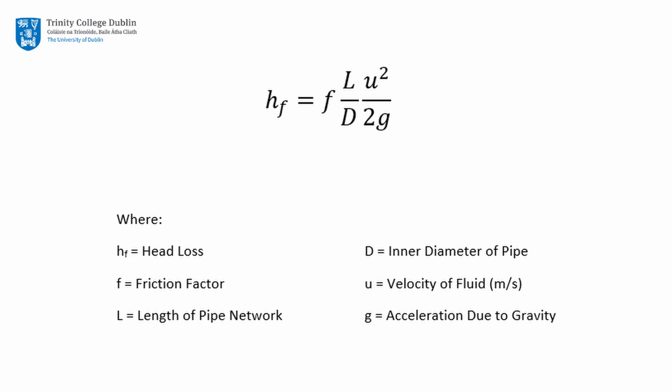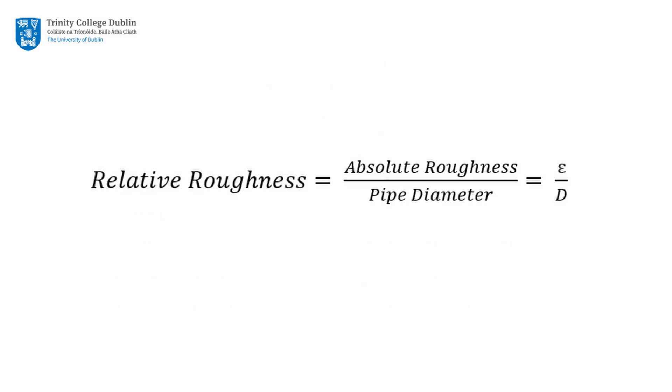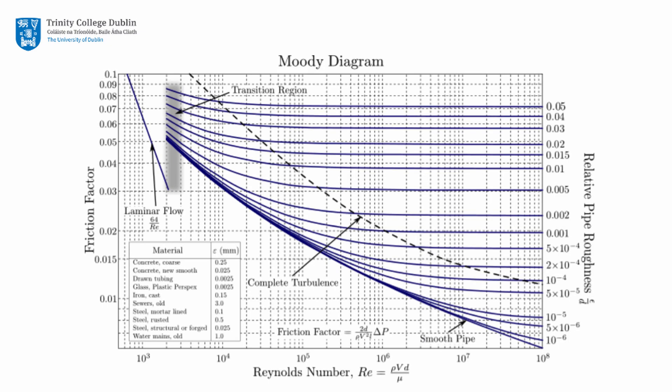The friction factor, F, is a function of the Reynolds number, Re, and the relative roughness of the pipe. The relative roughness is the ratio between the absolute roughness and the pipe diameter. Re, F, and the relative roughness can all be represented on the Moody diagram, which may be used to determine if flow in a pipe would be laminar or turbulent in nature.